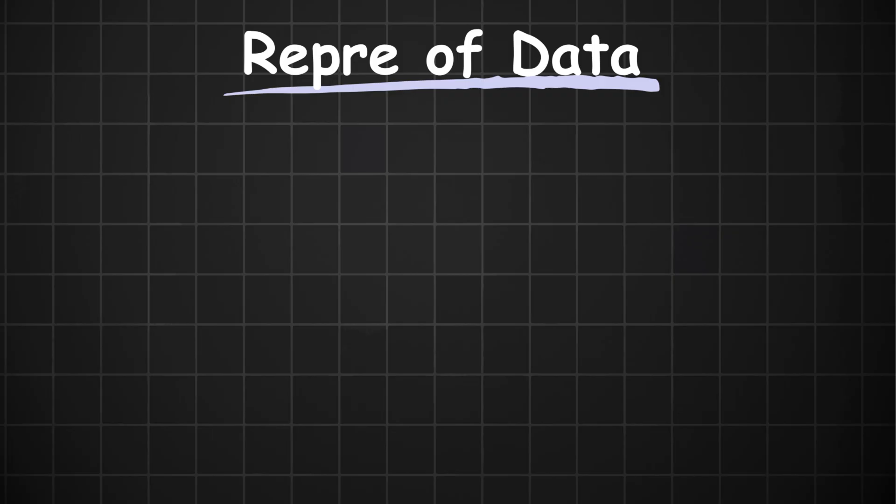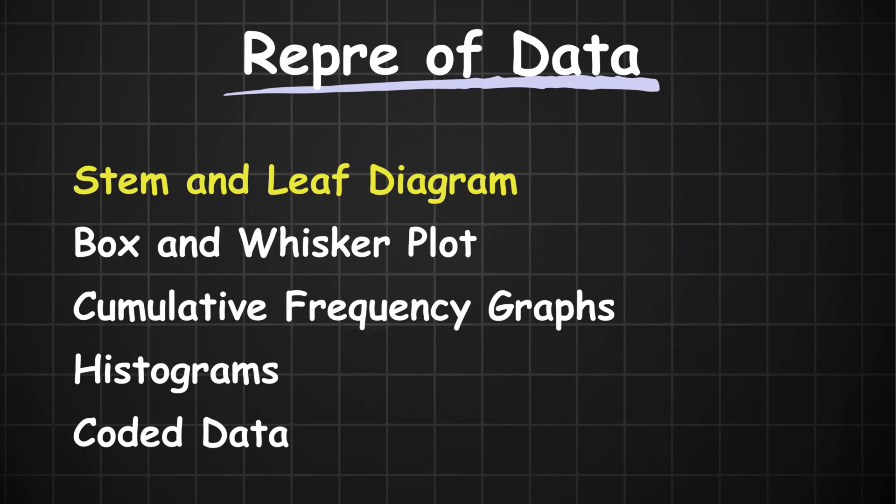For this topic we have 4 different data visualizations that you must know: the stem and leaf diagram, box and whisker plot, cumulative frequency graphs and histograms. And we also have a coded data question in there. In all fairness, you probably should learn how to work with all the different data visualizations, but Cambridge is probably going to only bring one of them in October. And I think I know which one it is.